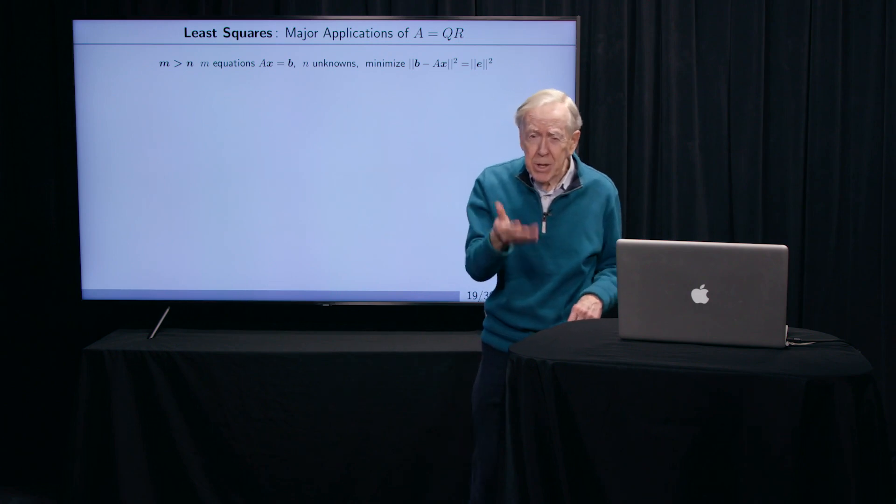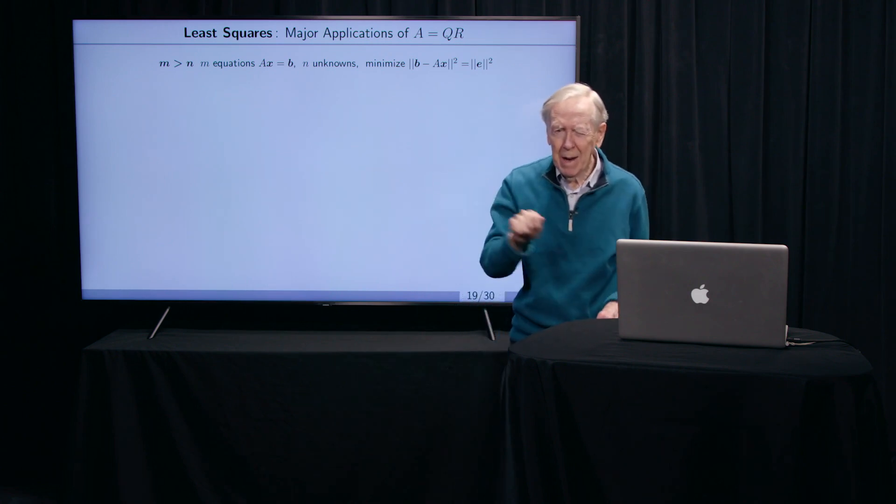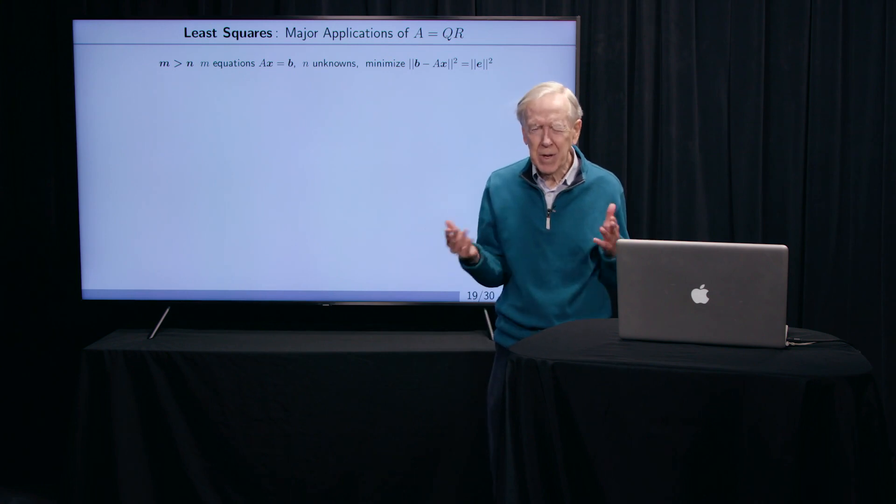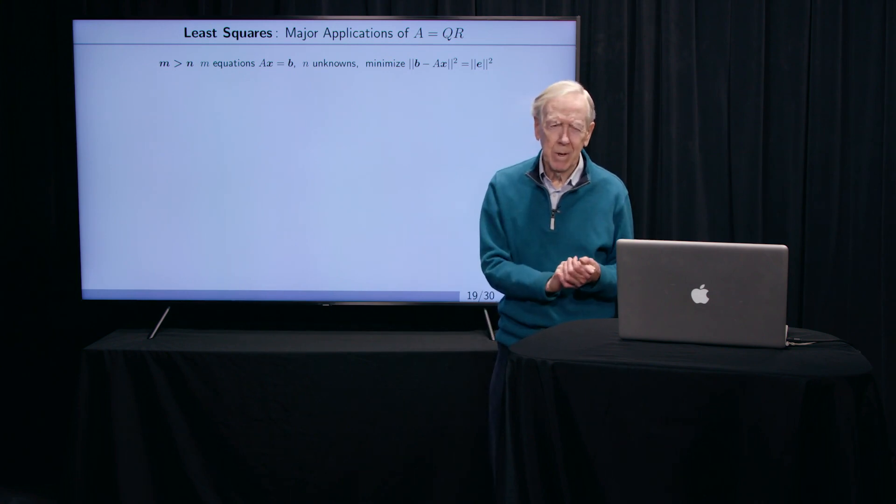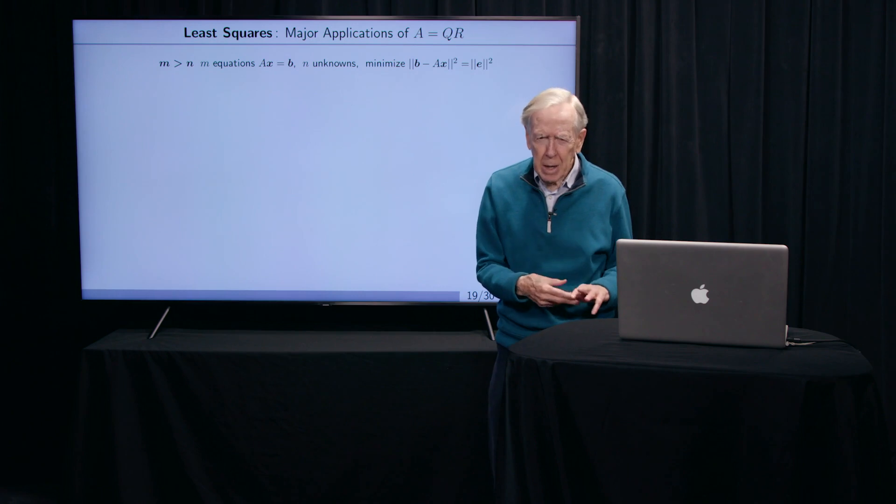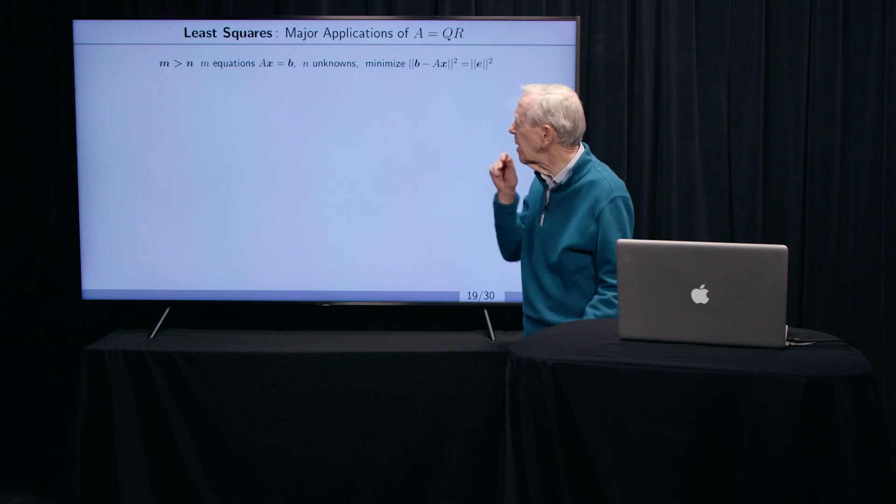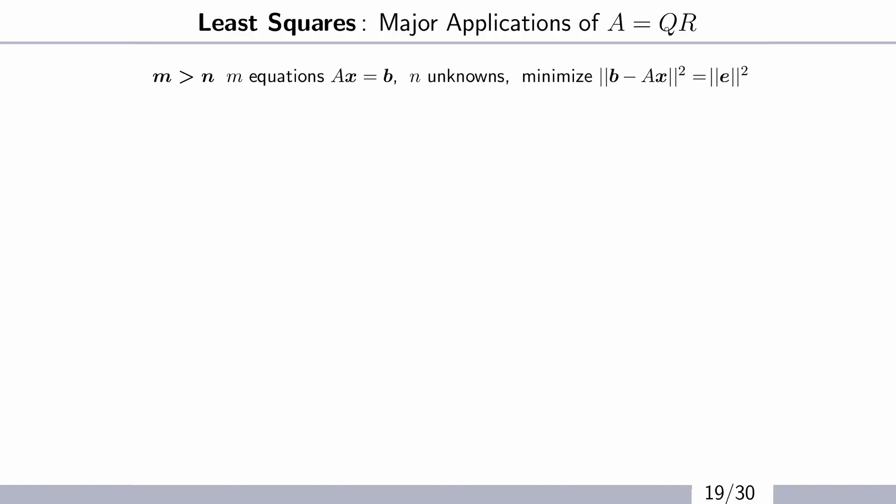And we might have only two unknowns, fitting a straight line with only two variables. So how am I going to solve 2,000 equations with two unknowns? Well, I'm not. But I'll look for the best solution. How close can I come? And that's what least squares is about. You get Ax as close as possible to B.